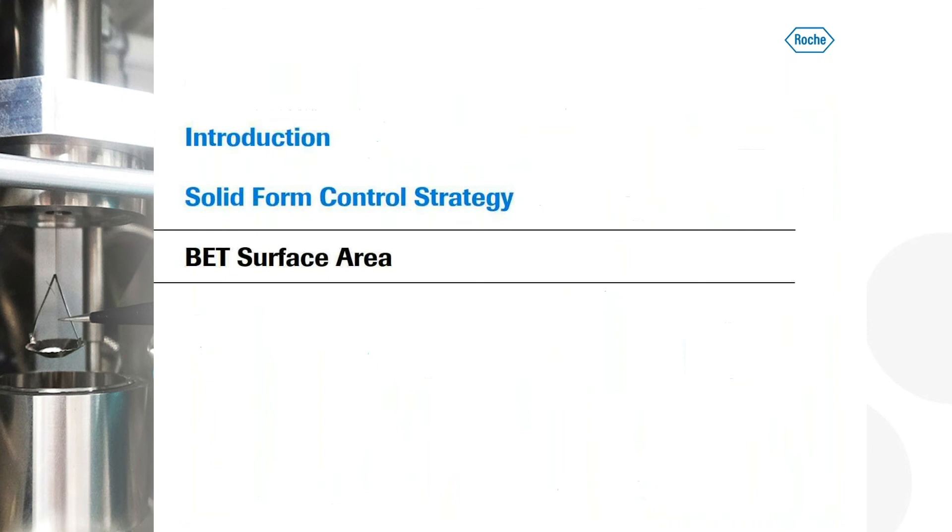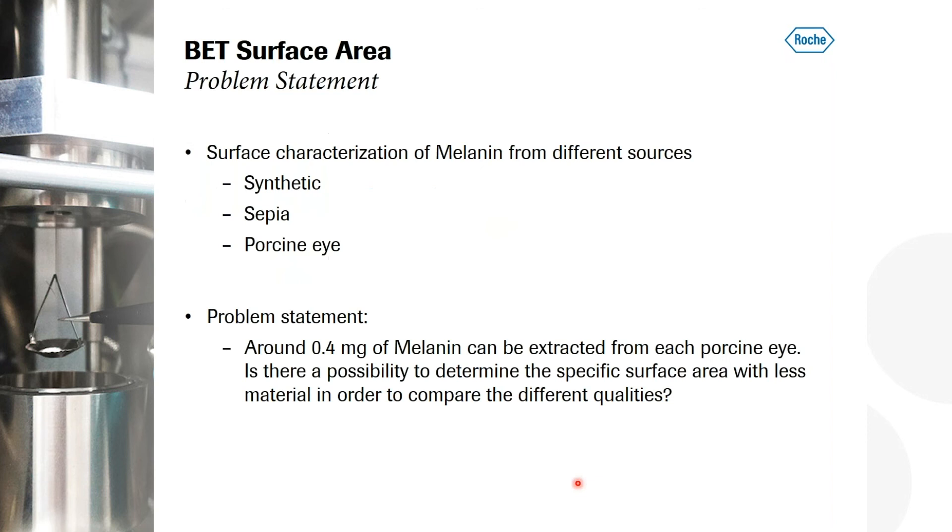With this, I want to change gears and talk about BET surface area. And to be honest, I am not an expert in BET specific surface area determinations. But at some point a few years ago, we were asked if we would have a method to determine the specific surface area for a product which is called melanin from different sources. And typically, you use this classical BET measurement approaches. But for this, the problem was that they want to characterize this melanin from sources from the porcine eye, sepia and synthetic. The synthetic one is not an issue. You can buy it kilogram wise. That's not an issue. Also sepia, it can be extracted rather simple. Problem is the material from the porcine eye.